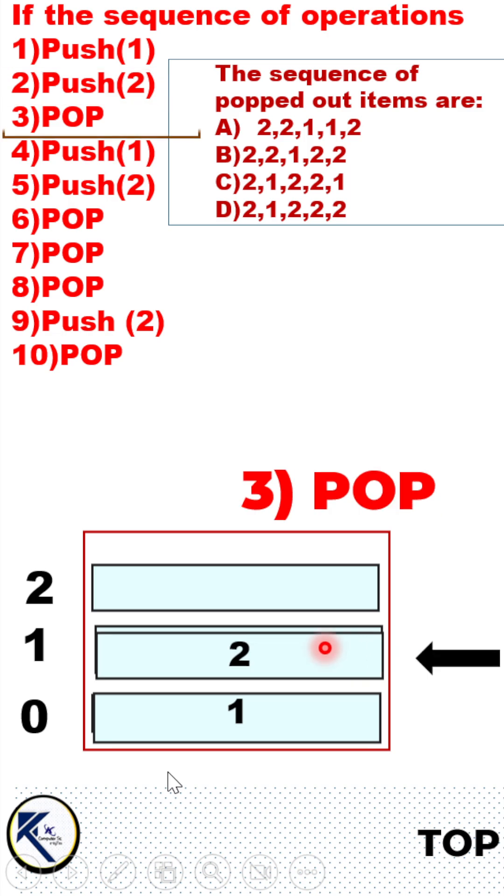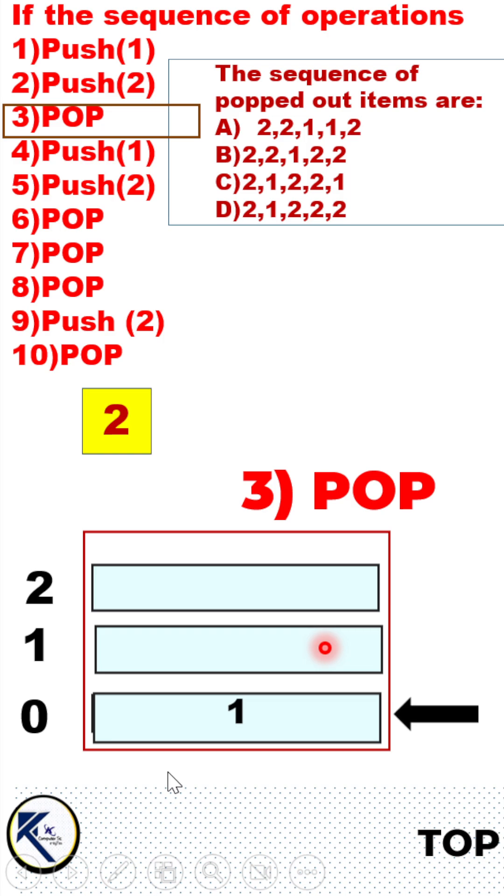Third operation is pop. So this is the topmost element, it will get removed. With every pop the top pointer will be decremented. Yellow color box represents item removed from the stack.